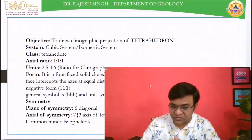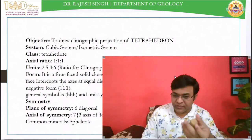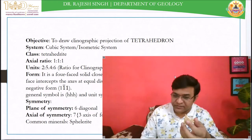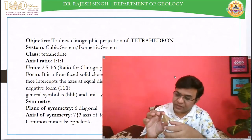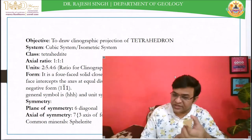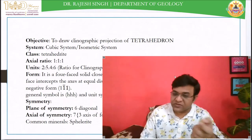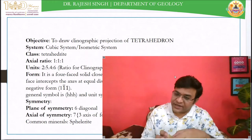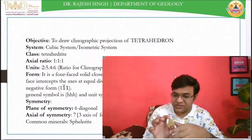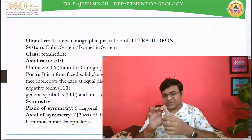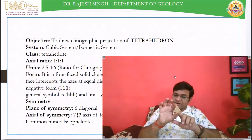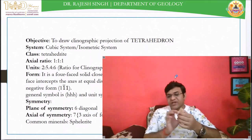This is the tetrahedron. It belongs to the cubic system and the class is tetrahedride. The symmetry elements are different for the tetrahedron in comparison to the cube and octahedron, because those belong to the normal class of the cubic system. But the tetrahedron belongs to the tetrahedride class. As its name suggests, tetrahedron means four heteronormous faces, so it consists of four faces.